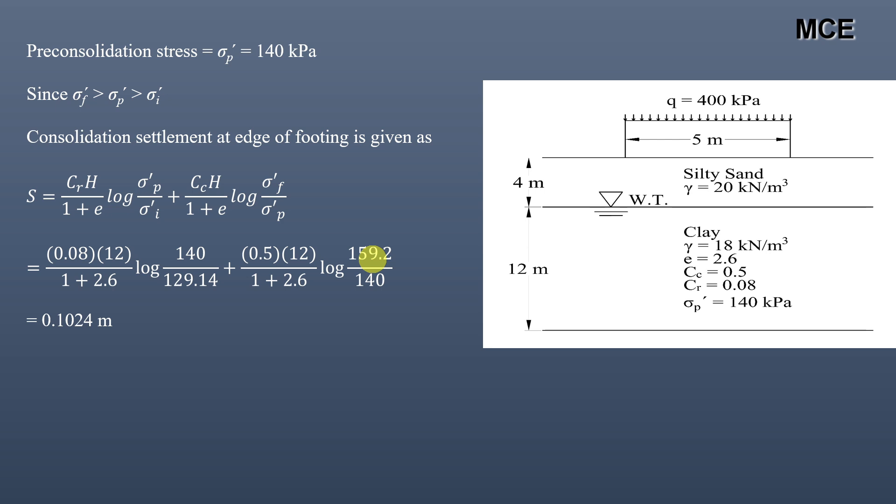The consolidation settlement at the edge of the footing is 0.1024 meters or 10.24 centimeters. We can see that there is more settlement at the center and less at the edge — in other words, there is a differential settlement between the center and the edge of the footing.